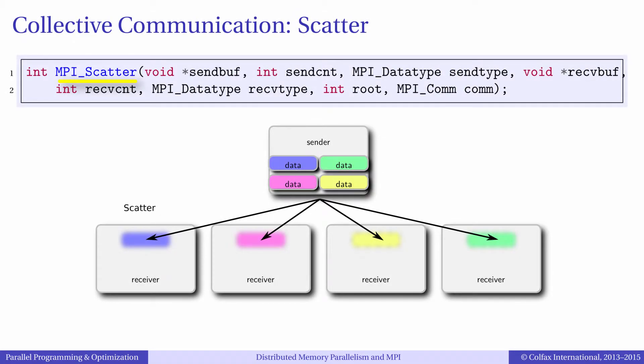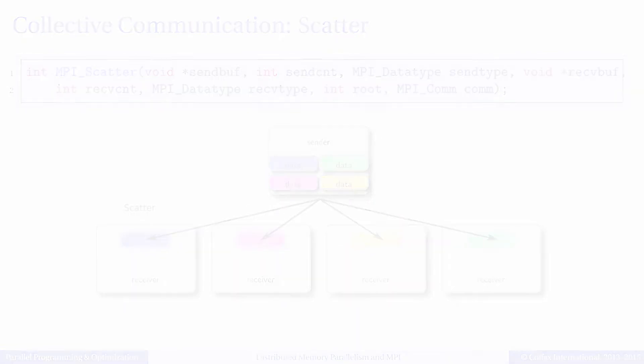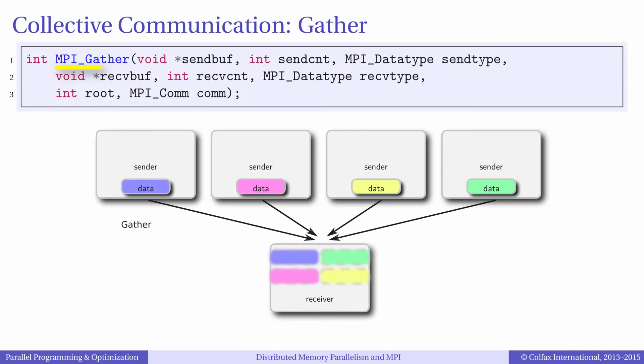Another collective routine is Scatter, where one process distributes parts of the dataset to the respective other processes in the communicator. Gather is the inverse of scatter: multiple processes send parts of a dataset which are aggregated in the receiver.